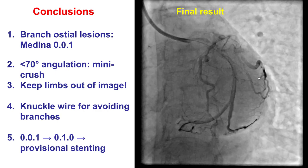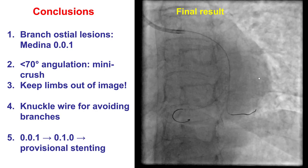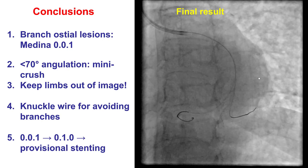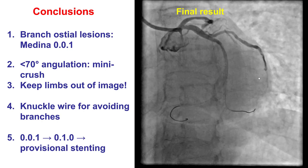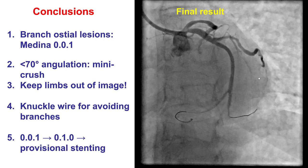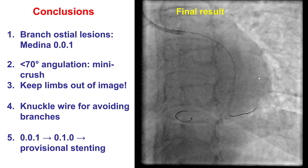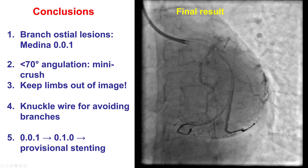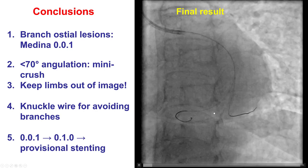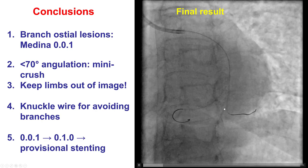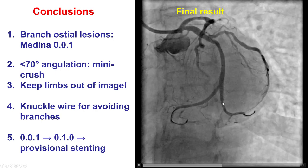Several interesting observations from this case. First, by classification, side branch or branch osteal lesions are Medina 0-0-1. For angulations of 90 degrees, direct stenting is the way to go; however, for angulations less than 70 degrees, mini-crush is the most commonly used technique. Third, it is important to keep the limbs of both operator and patient out of the image field, for clarity and to reduce radiation dose. Fourth, knuckle wires can be helpful for avoiding the wire entering side branches. Finally, a different approach for Medina 0-0-1 bifurcations — when the side branch is the same size or larger than the distal main vessel — is to reclassify it as a 0-1-0 and perform provisional stenting, jailing what was initially considered the continuation of the main vessel.